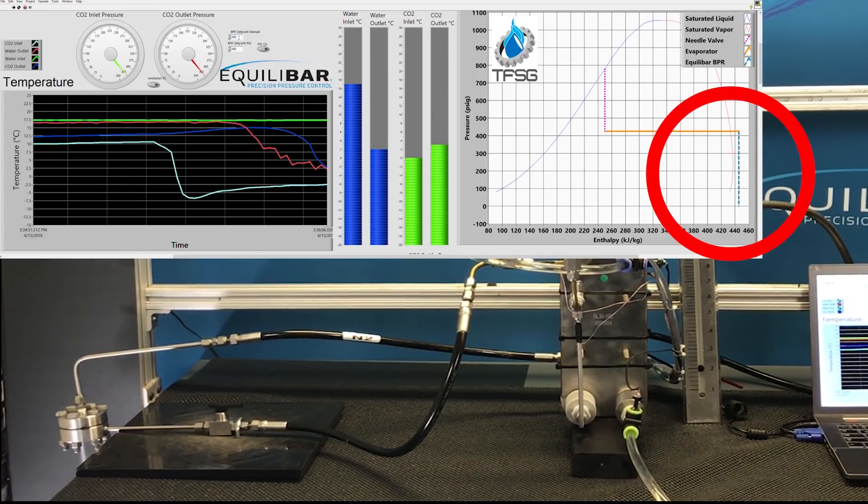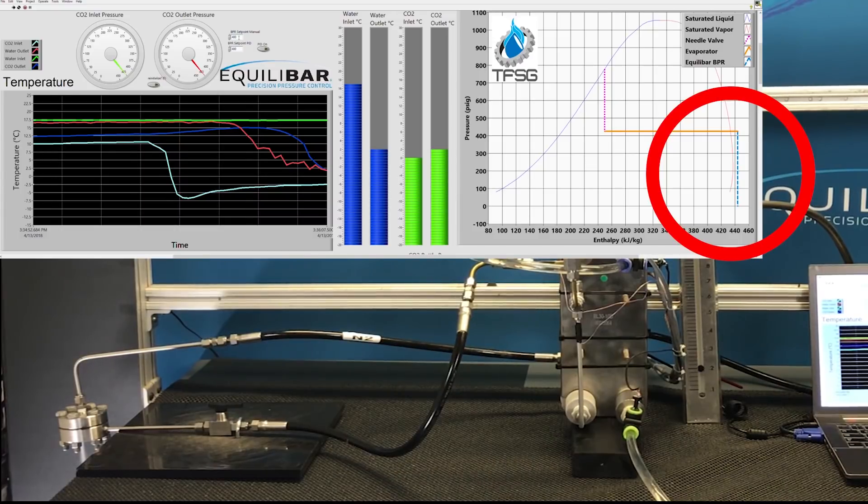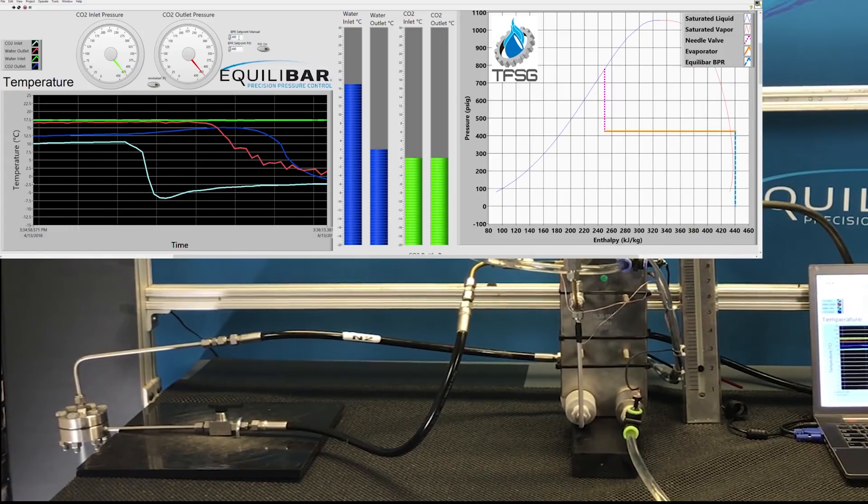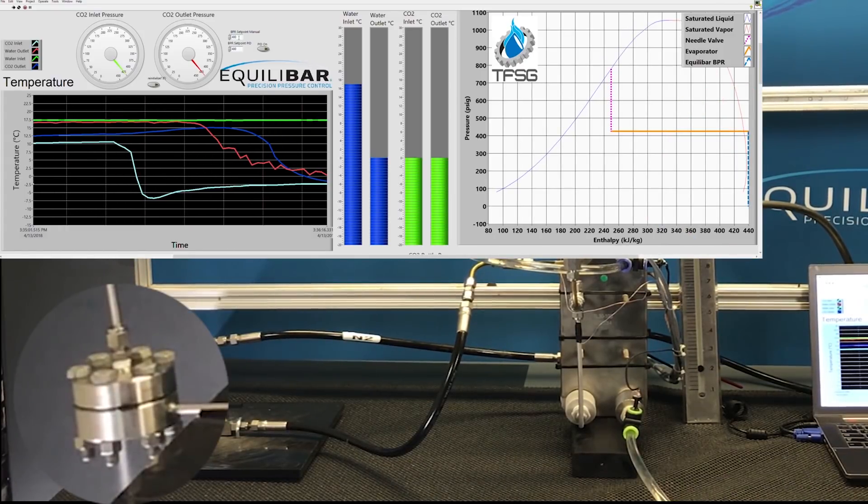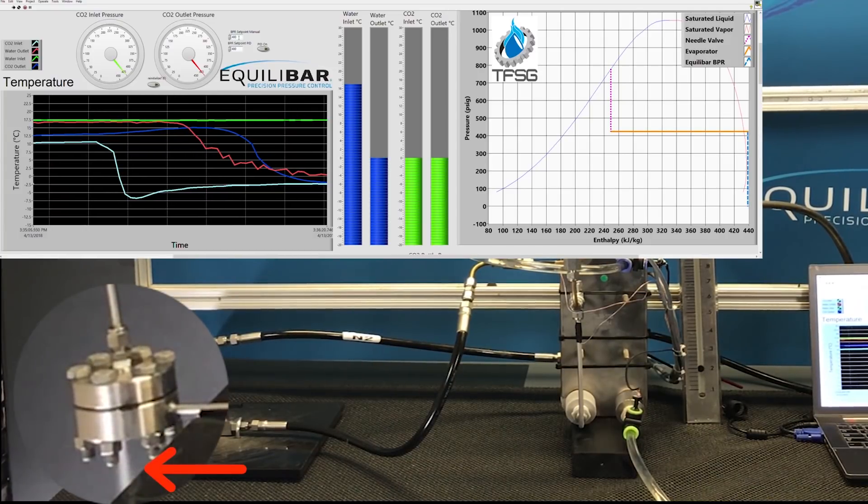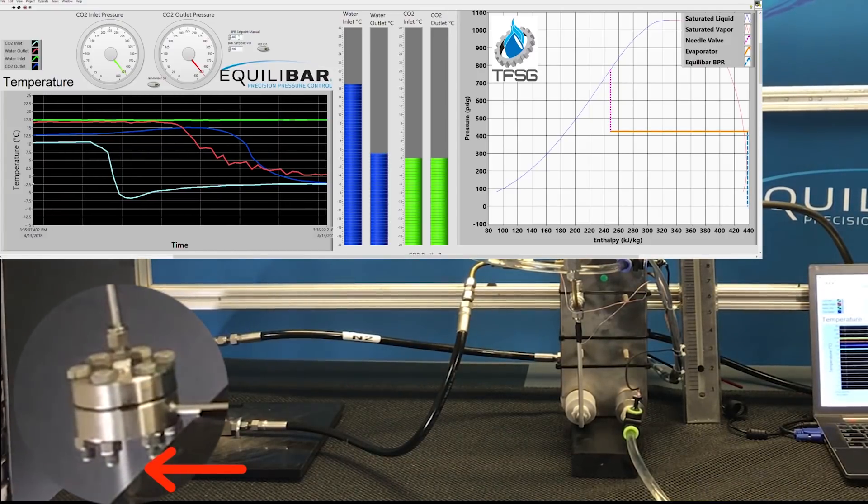As the heat exchange process proceeds, the enthalpy of the CO2 drops at the inlet of the Equilibar moving the blue dashed line left. At this enthalpy state deposition occurs forming dry ice at the outlet of the Equilibar. This is visible in the zoomed image at the left of the screen.